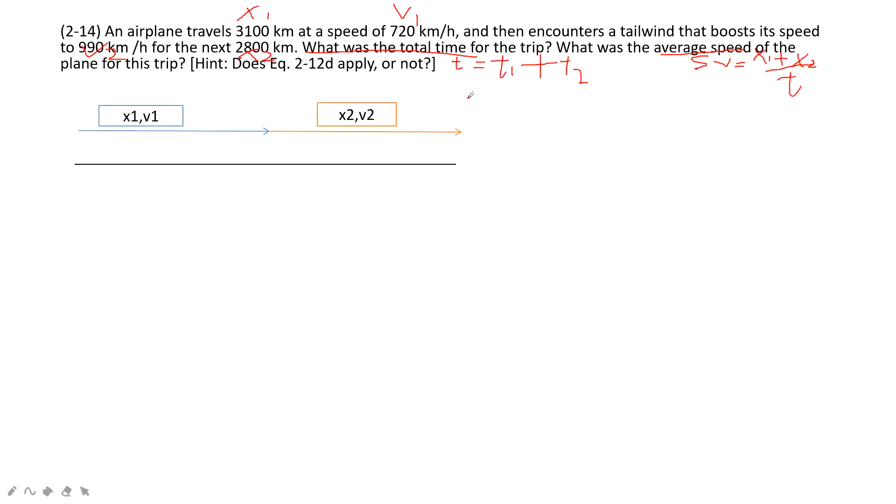At there, we need to convert the unit in the SI unit. So then, 3,100 km is just 3.1 times 10 power 6 meter. And then, the v1, we convert unit from km per hour to meter per second. Similarly, x2, we need to convert unit to meter. And then, the unit for v2 still needs to be meter per second.